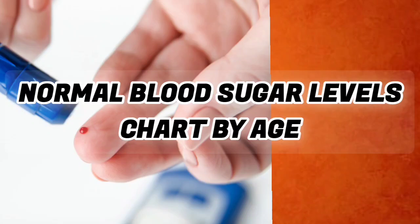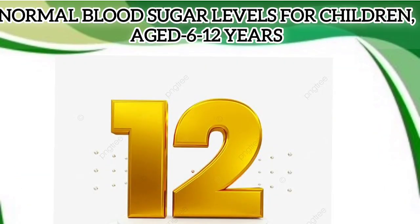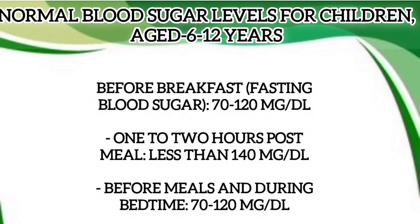Know the ideal sugar levels for different age groups. Normal blood sugar levels for children aged 6-12 years: before breakfast fasting blood sugar, 70-120 mg/dL; 1-2 hours post-meal, less than 140 mg/dL; before meals and during bedtime, 70-120 mg/dL.